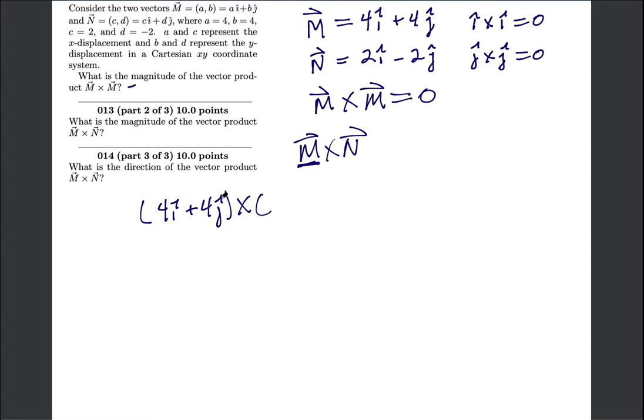And I'm going to write them down: 4i plus 4j crossed with, and order matters, M has to go first. M must go first. Let me write down a couple of other helpful unit vectors.